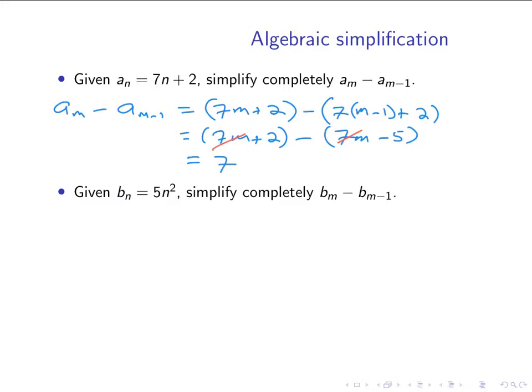On the other hand, b_n equals 5n squared is more complicated, and so we shouldn't be surprised that the subtraction b_m minus b_(m-1) is not going to simplify as much. But our real goal here is to pay attention to the algebra that's needed to do this simplification. So first we'll set this up. Again, when I have 5n squared, if I'm going to replace the n with m minus 1, then I introduce parentheses around it to make sure that I really am doing 5 times the entire subscript squared.